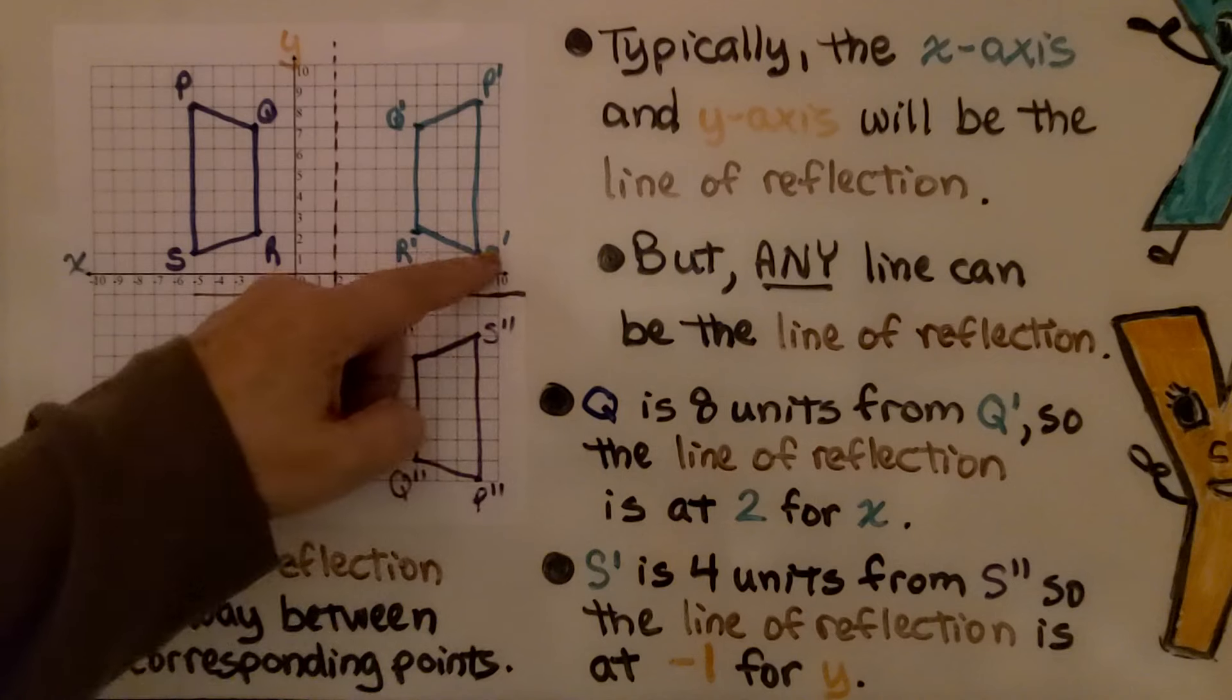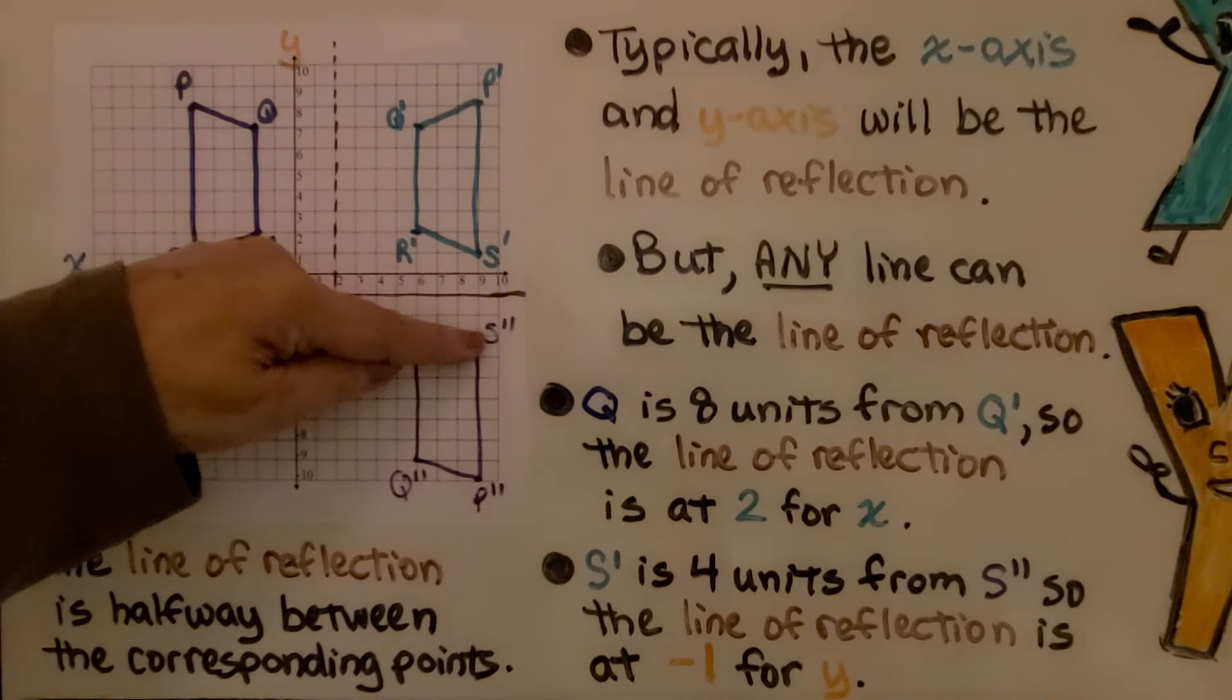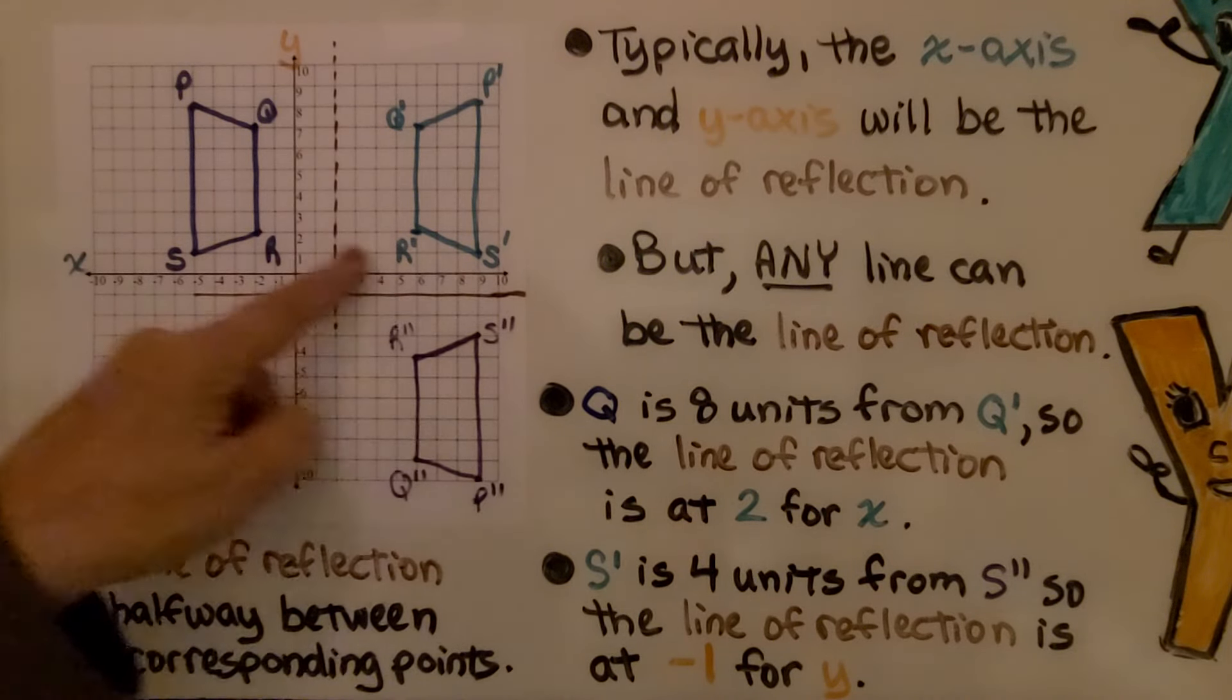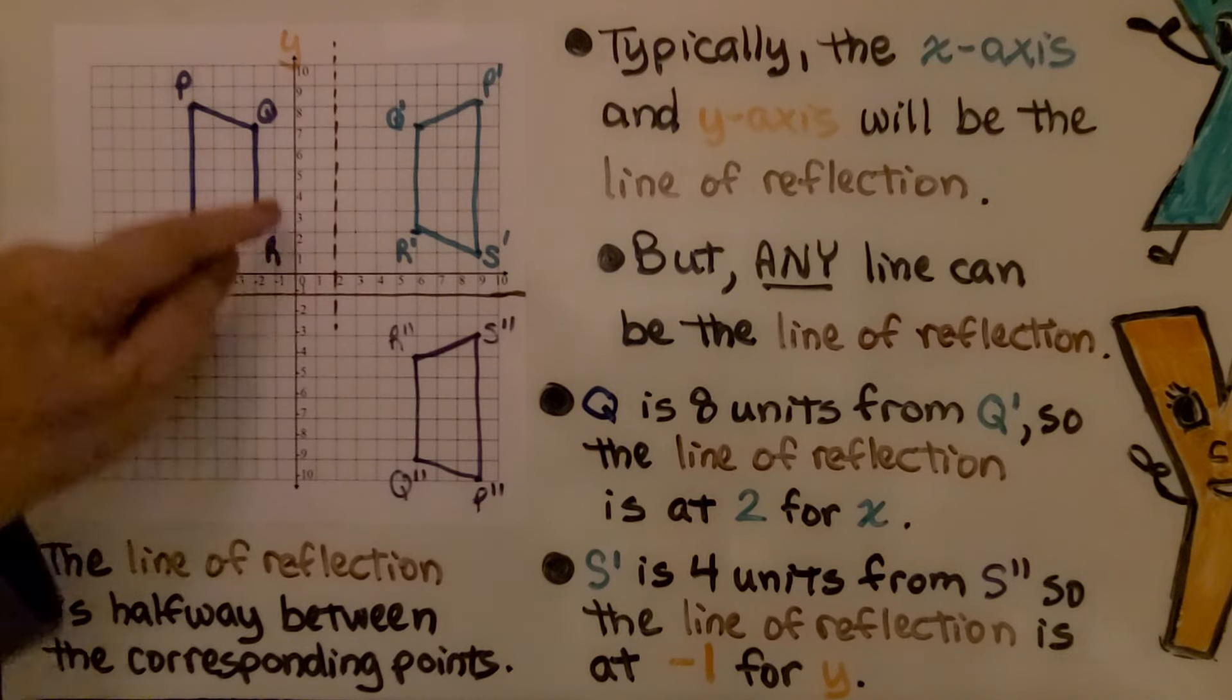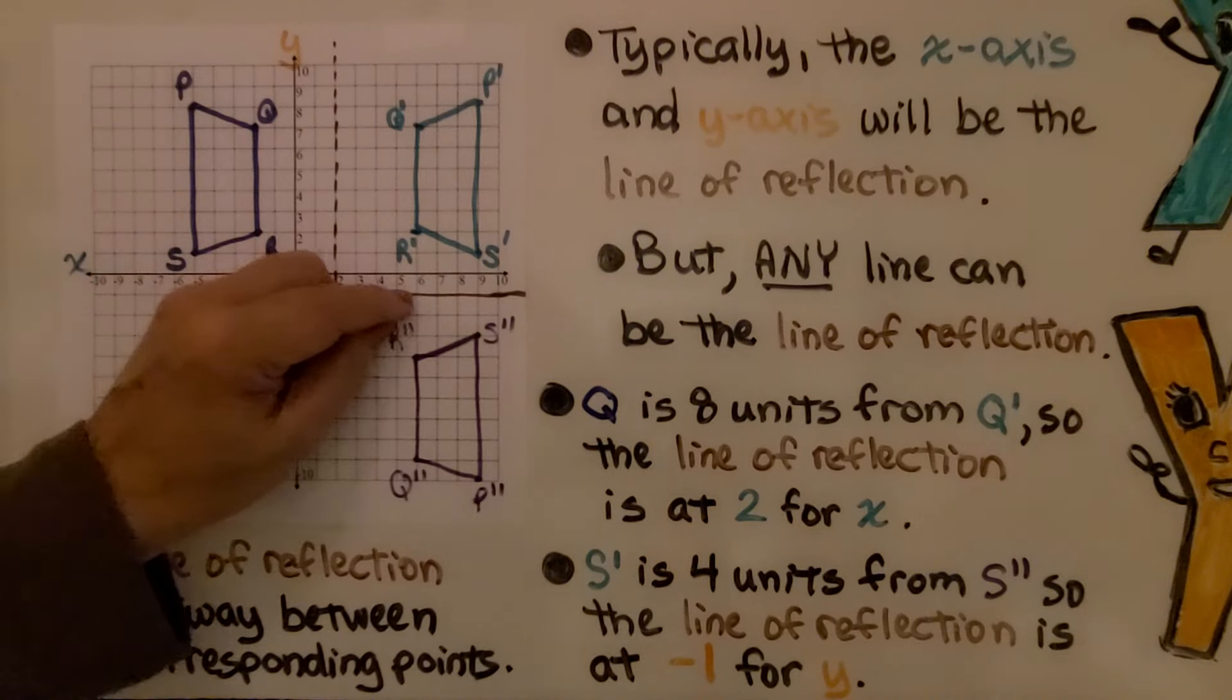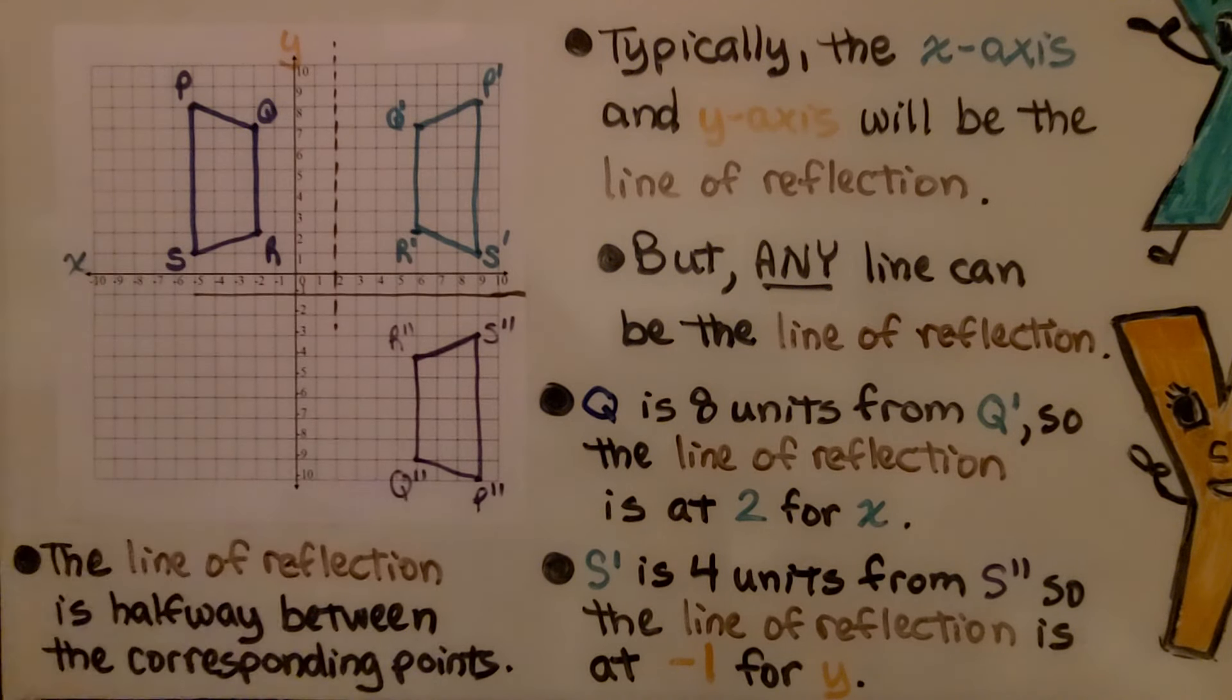Now look at S' here. It's four units away from S''. So the line of reflection is not the x-axis. It's y = -1. Here's our y-axis. And that's zero, -1, -2, -3. So y = -1 is going to be the line of reflection for this image and its image.